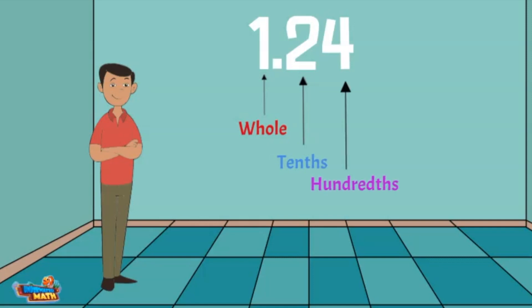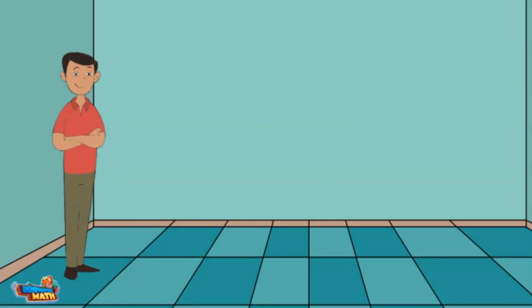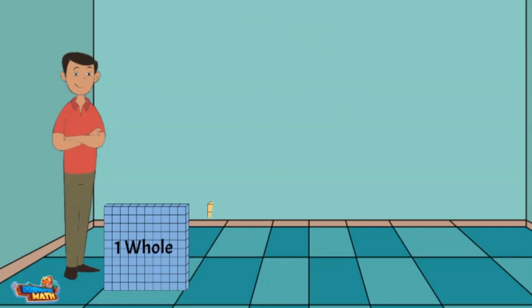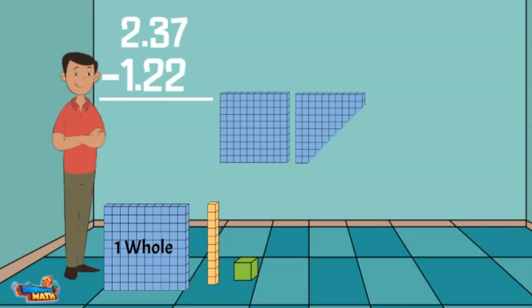In our first problem we will subtract decimals using base ten blocks. The group of one hundred represents the whole, the group of ten represents the tenths, and the cubes represent the hundredths. I begin by modeling the largest number in the problem, which is two and thirty-seven hundredths. It is represented with two groups of one hundred, three groups of ten, and seven cubes.